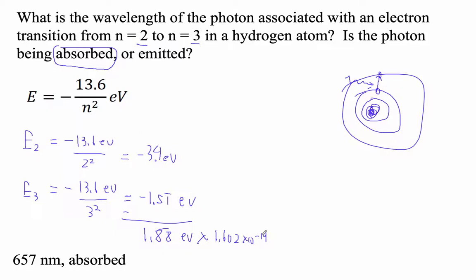All right. Times 1.602 E minus 19. And that is 3.026 times 10 to the minus 19th joules. And then we're going to figure out the wavelength.